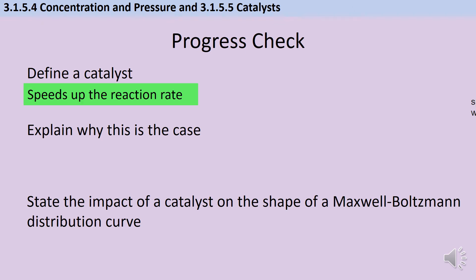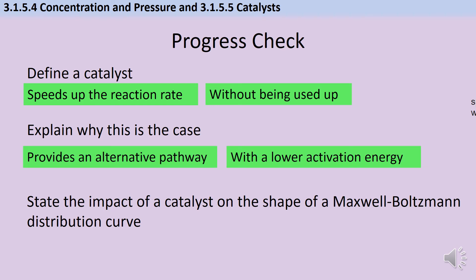A catalyst is a chemical that can speed up the rate of reaction, but it does this without being used up or permanently chemically changed itself. It's able to do this by providing an alternative pathway that has a lower activation energy. And if we were going to draw a Maxwell-Boltzmann distribution curve, then adding a catalyst wouldn't do anything to the shape of it at all. All it does is move that defining line to the left so that the number of particles that do have the activation energy is greater.